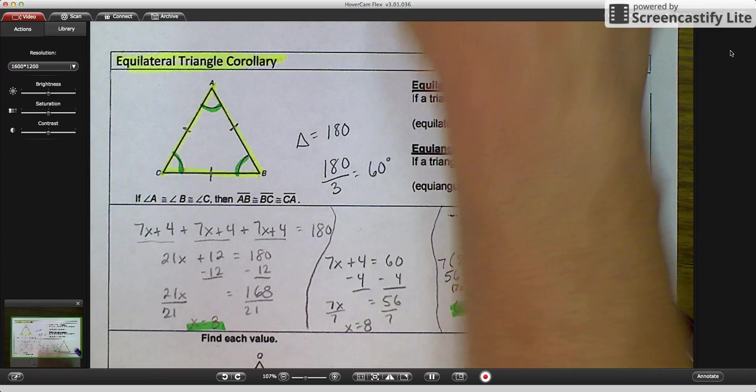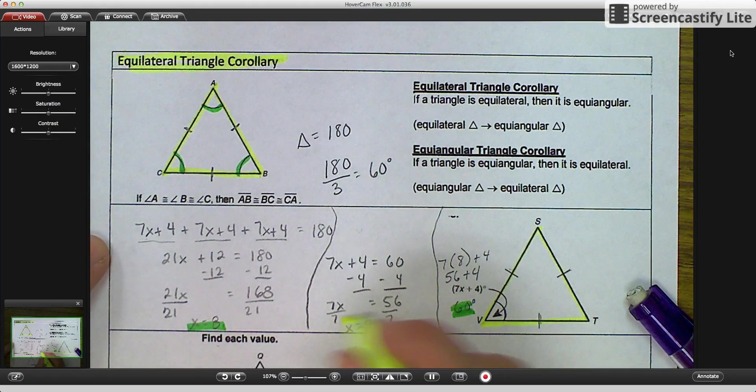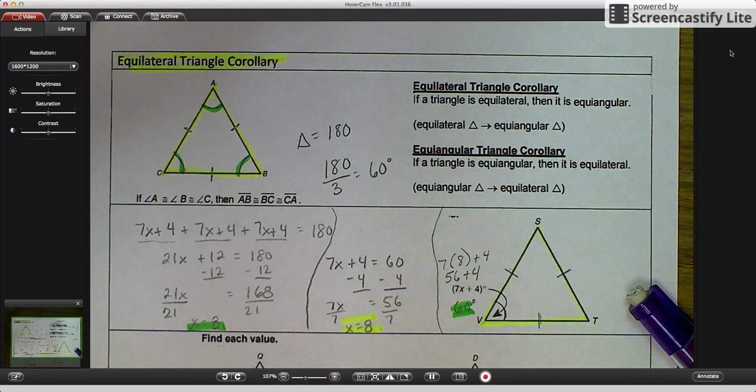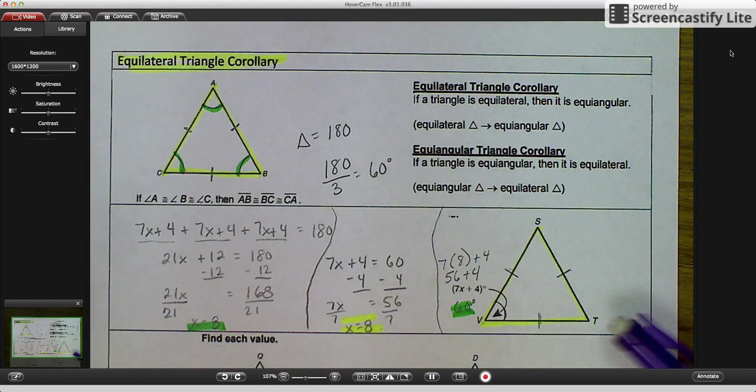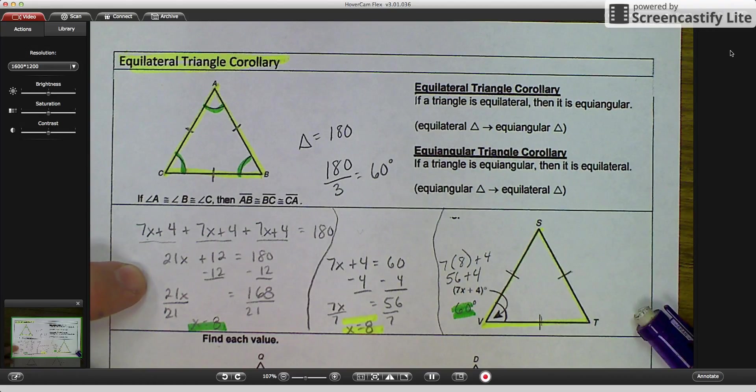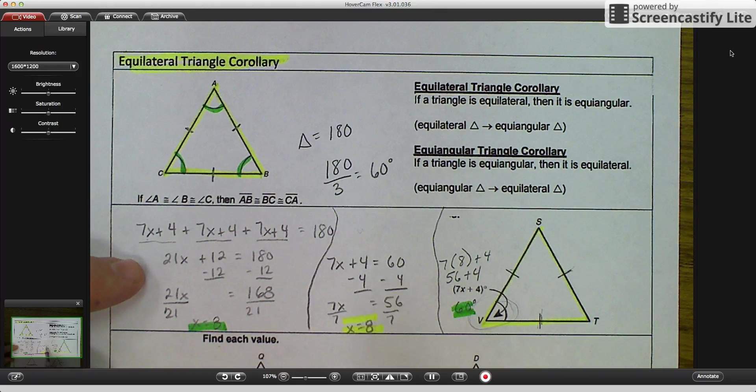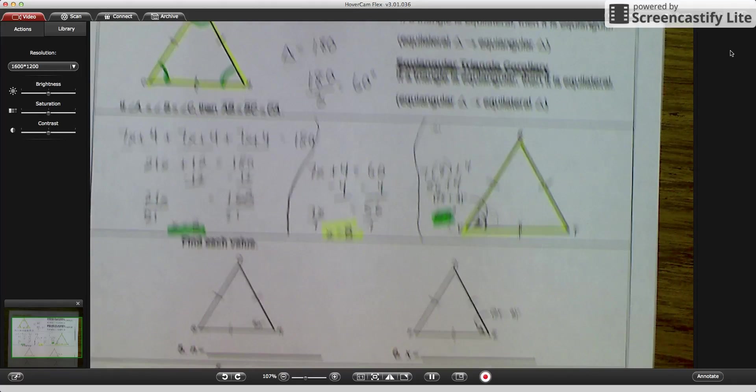So either way you do it, you're going to get the same answer. Just two different ways of doing it. If you want to go this way and make everything the same because all triangles have three angles that add up to 180, that's perfectly fine. Now, if you want to do it this way because you can jump a step and say, oh, I see that it's equilateral, so I know that this angle has to be 60 degrees, I can go a little bit quicker.